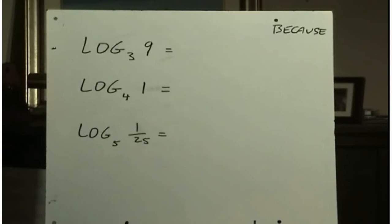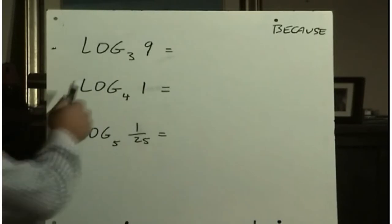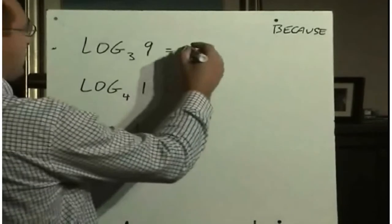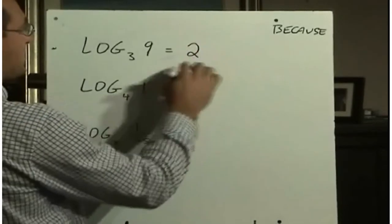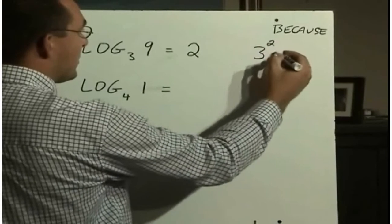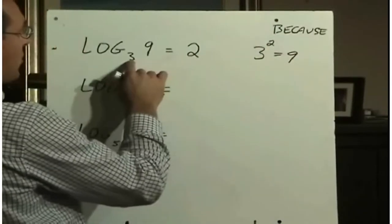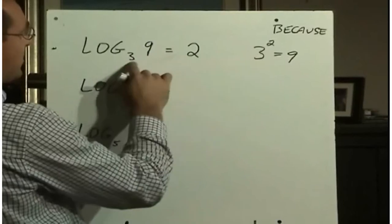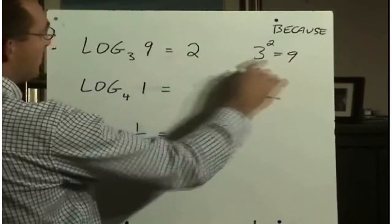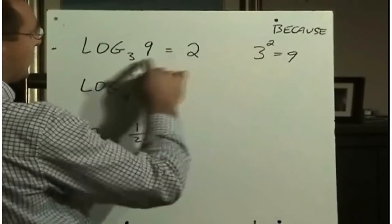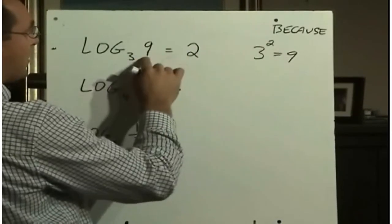We'll look at these three examples. Log base 3 of 9, well, that must be 2. Why? Because 2 is the exponent on 3 that would equal 9. So you see the relationship here between exponents and logarithms? A logarithm is simply the exponent. What is the exponent on this? That will give you this.